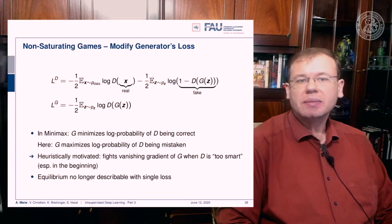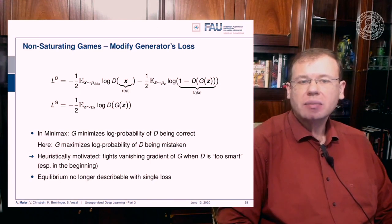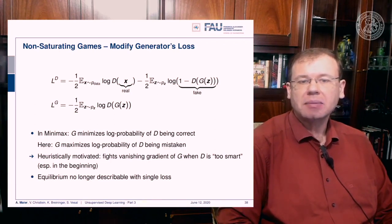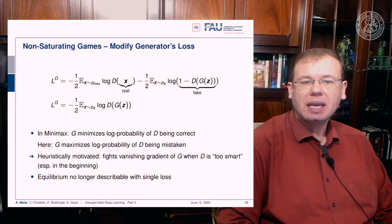We can use non-saturating games by modifying the generator's loss. Instead of using the same function for both, the generator has a new loss where it computes the expected value of the logarithm of the discriminator of G given some input noise. In minmax, G minimizes the log probability of D being correct; in this solution, G minimizes the log probability of D being mistaken. This is heuristically motivated because it fights the vanishing gradient of G when D is too smart, particularly at the beginning. However, the equilibrium is no longer describable using a single loss.